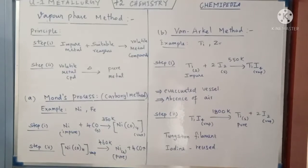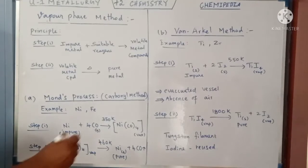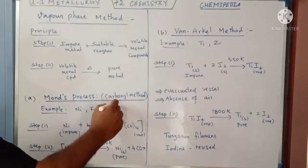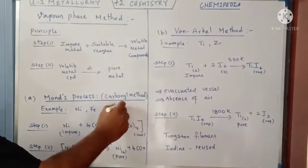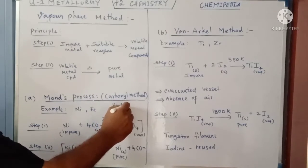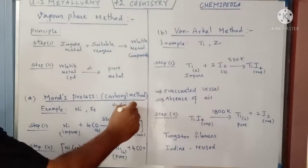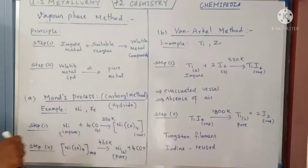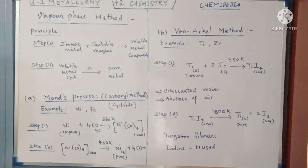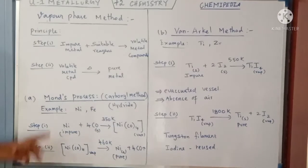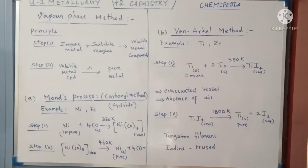The Mond process can also be called a hydride method, where the metal forms a hydride compound. Metals such as nickel and iron are generally refined by the Mond process.